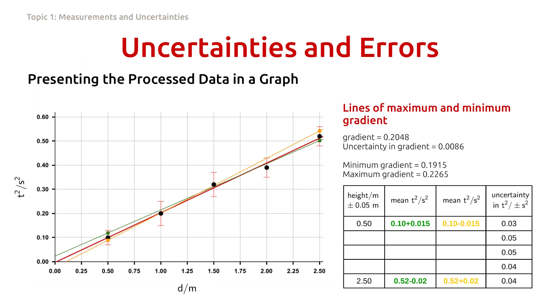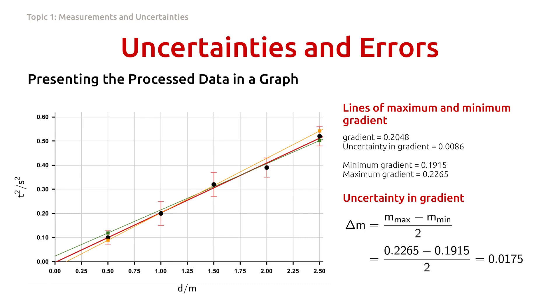And we can still state the gradient within the range. In this approach, instead of adding and subtracting the data with the uncertainties, here we add and subtract the data with half of the uncertainties, as can be seen from the table and the graph. The minimum gradient is now 0.1915, and the maximum gradient is 0.2265. By substituting these numbers into this equation, we get the gradient uncertainty of 0.0175.